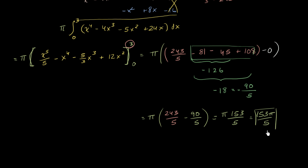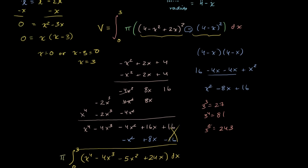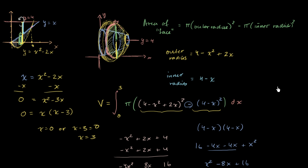After all that math, you sometimes forget what we were doing in the first place. We were figuring out the volume of this figure that had a region bored out of its inside. That volume is 153π over 5.